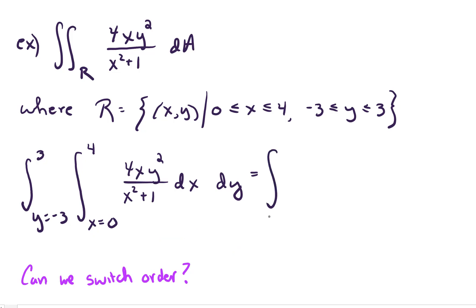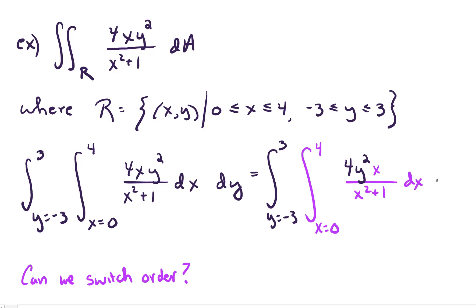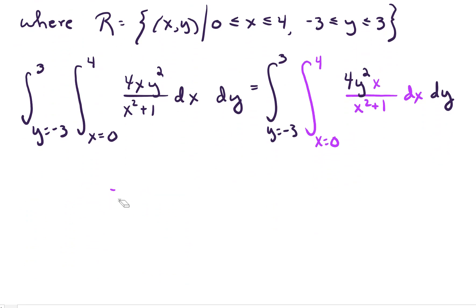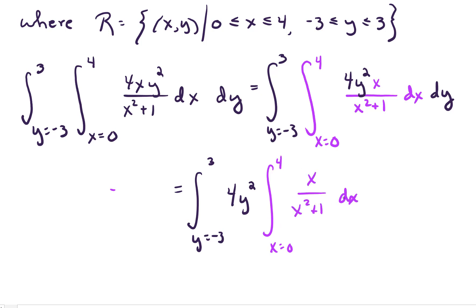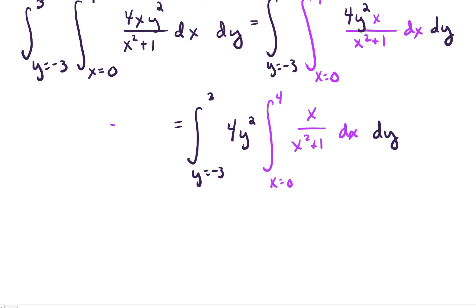I'm going to highlight our integral in x with another color. We've got the integral from x equals 0 to 4 of 4y² times x / (x² + 1) dx, with dy on the outside. Since 4y² is like a constant with respect to x, I'll pull that outside. Now I'm looking at x / (x² + 1) dx. For this integral I'll use a u-substitution: let u = x² + 1, so du = 2x dx, which means (1/2) du = x dx.